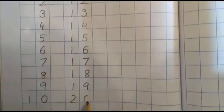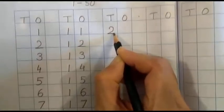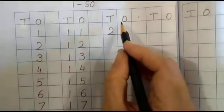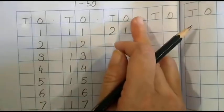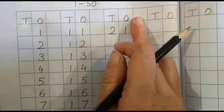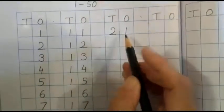Two zero twenty. Now we will go to the next box. Two one twenty one. We are going to write only under T and O. We are not going to write in the box where we have already put the dot.